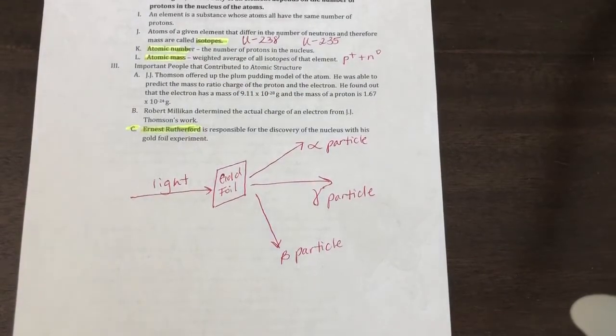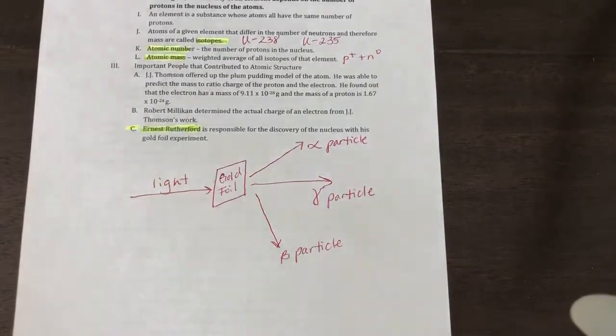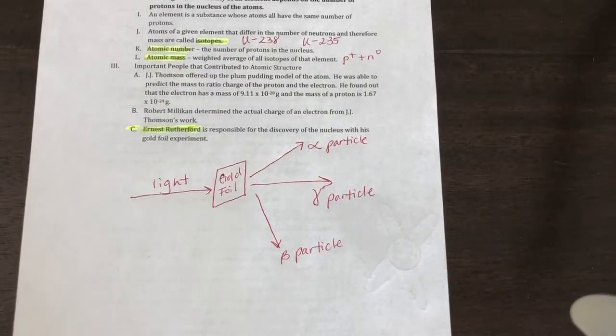So that is your atomic structure notes, the main part of the notes, you know, definitions, that sort of thing. We're going to go through how to interpret the periodic table, how to find protons, neutrons, and electrons in the next video. Thanks, and have a good one.